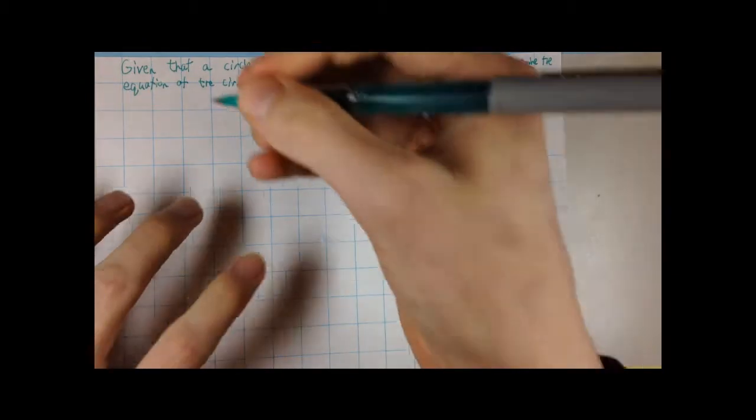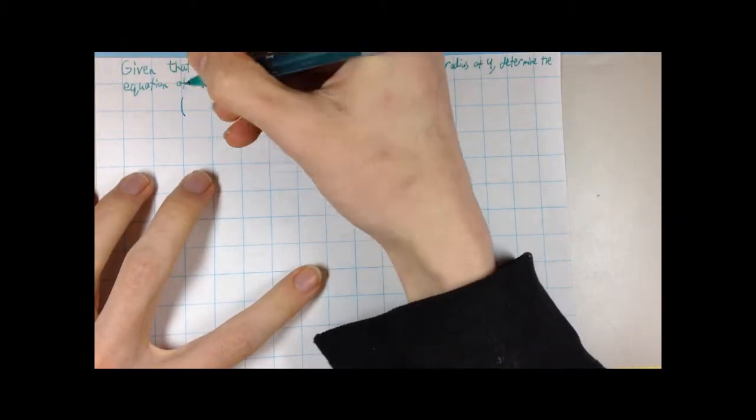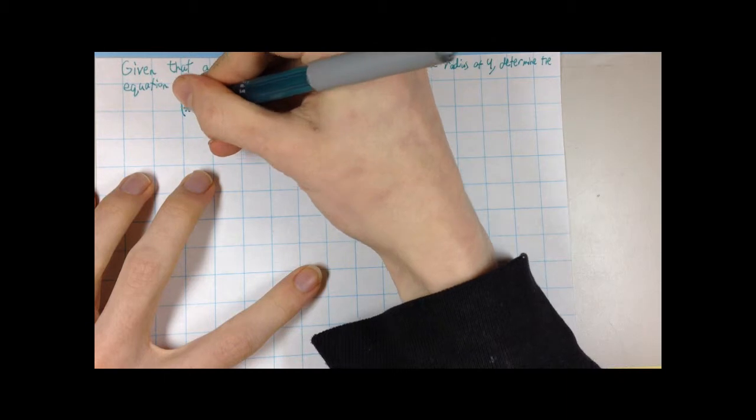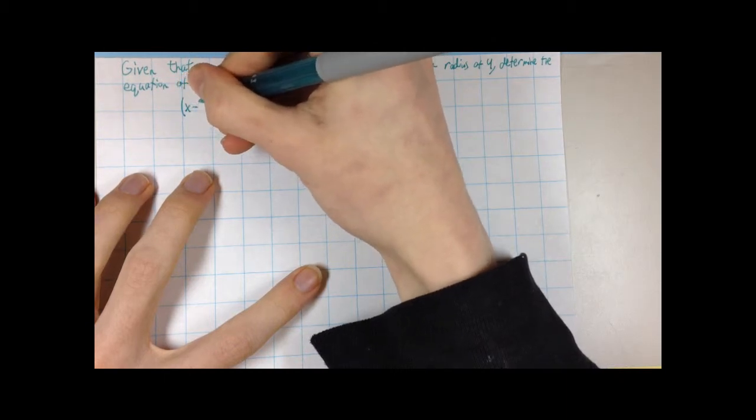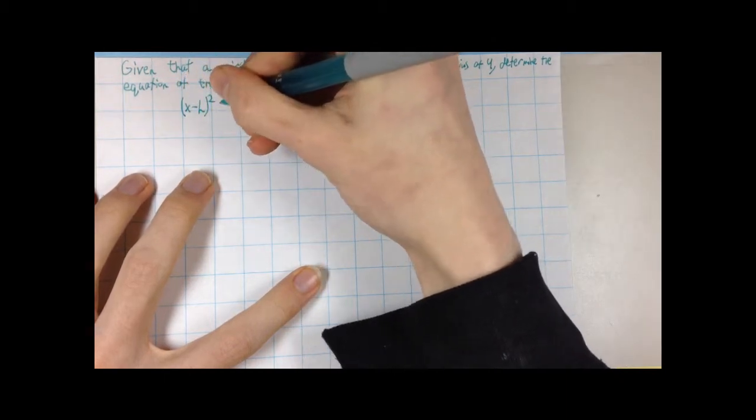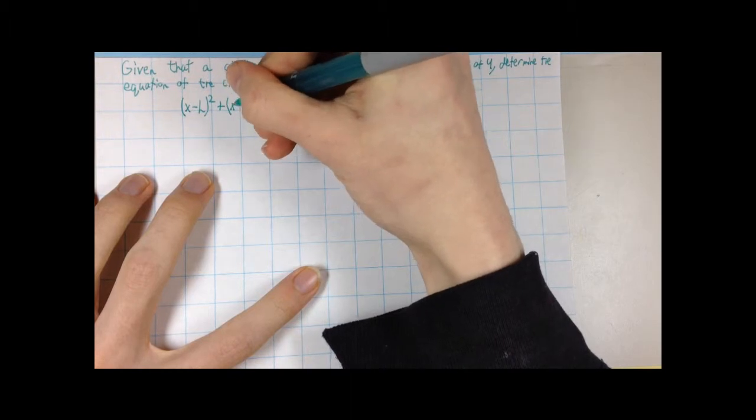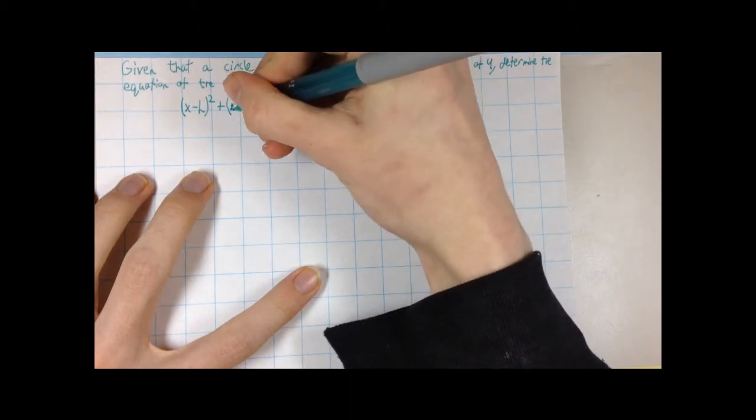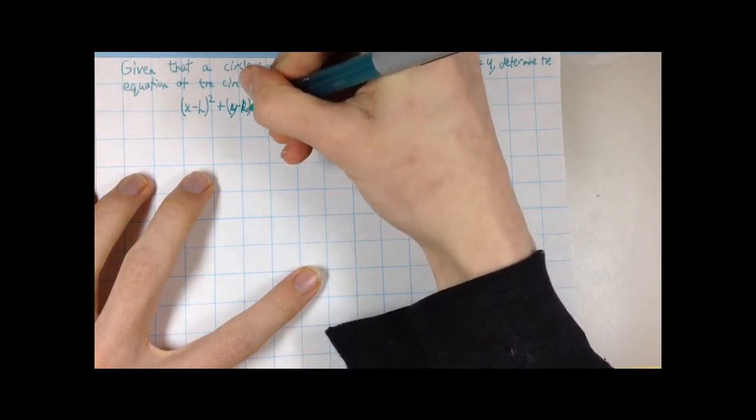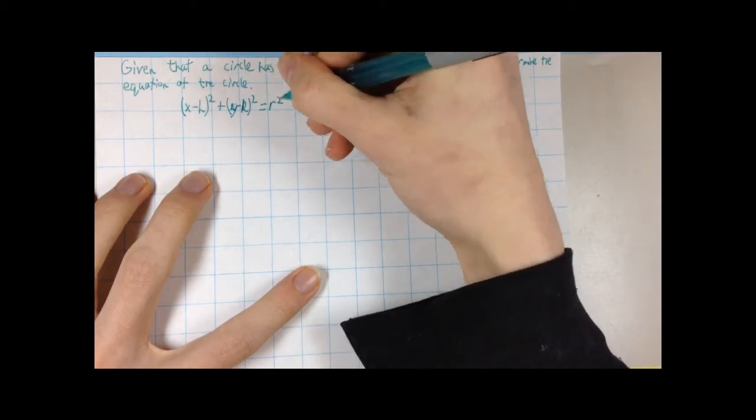So basically, what we are trying to do is fill in all the information that is needed for this formula: x minus h squared plus y minus k squared equals r squared.